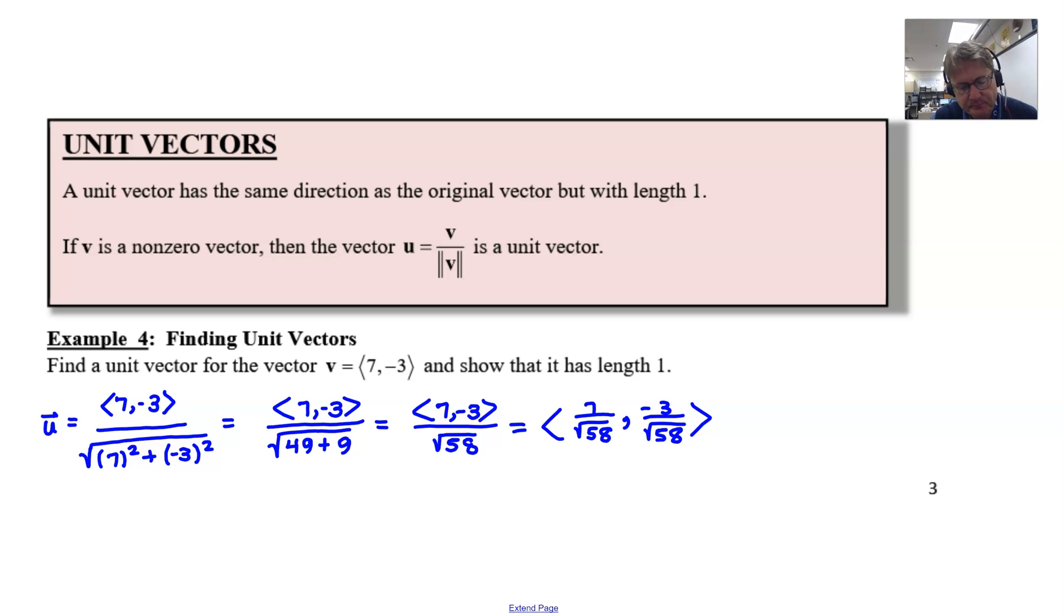Now it does say to show that this indicated vector has a length of 1, in other words, that its magnitude is 1. So let's demonstrate that by finding the magnitude of u. And we know that is defined as the square root of the sum of the squares of the two components. So we'll take 7 over the square root of 58 and square it and add it to negative 3 over the square root of 58, and we'll square that quantity as well. And we'll make sure that all of this is under the square root, of course.